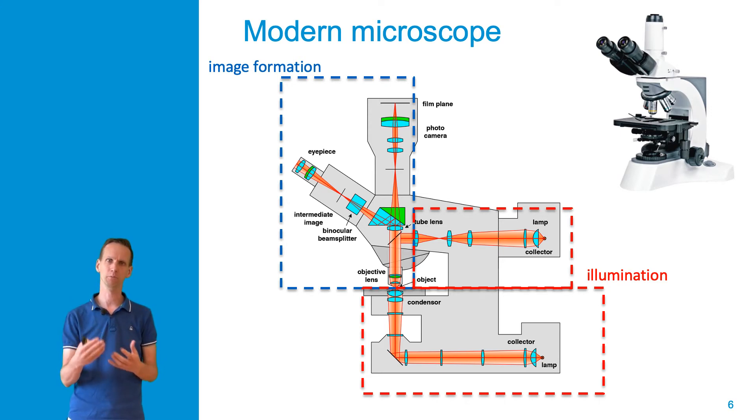The illumination needs to make sure that we illuminate homogeneously over a large field of view, and the image formation needs to bring in a magnification so that we can actually observe details at a higher resolution.